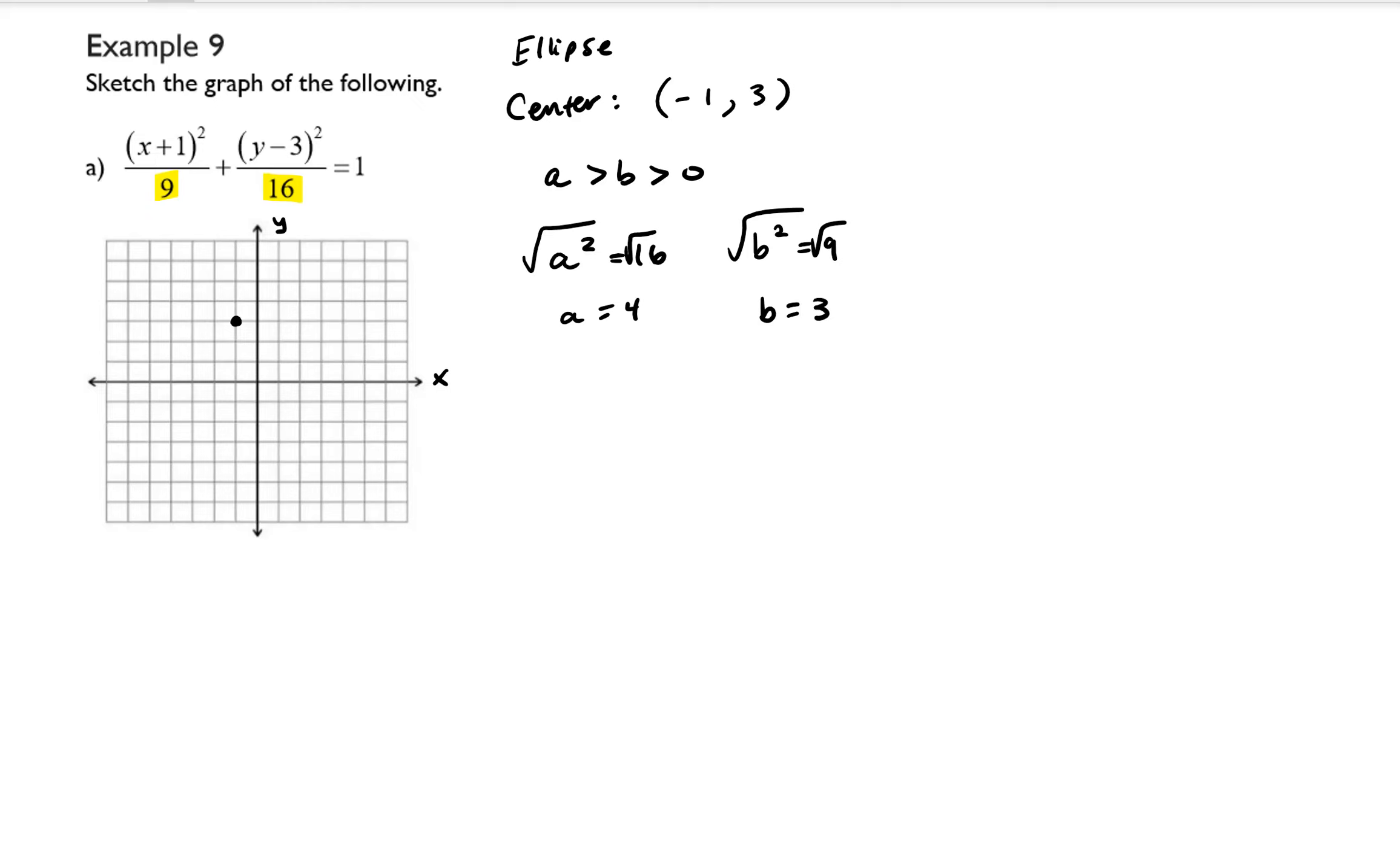So that means that vertically we're going to move up and down 4 units to get our vertices. So we'll start at the center and move up 1, 2, 3, 4. So there's a vertex and then we move down 4 from the center 1, 2, 3, 4.